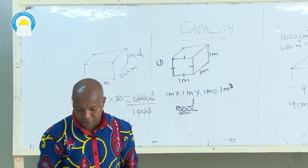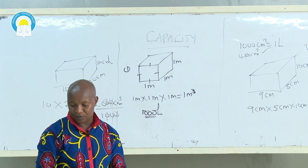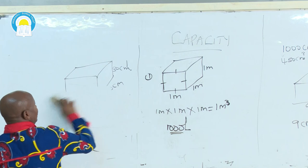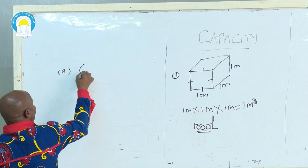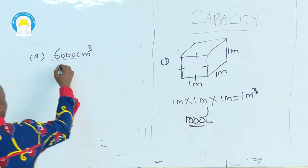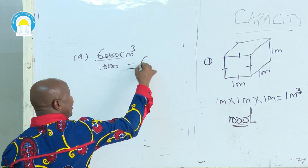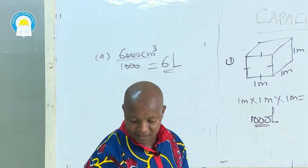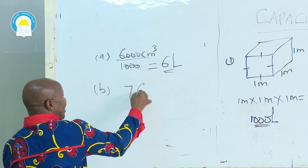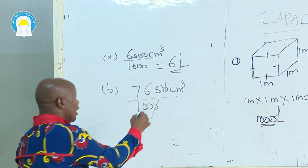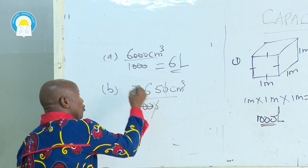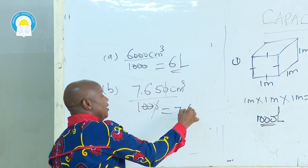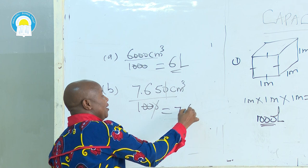Let's give some more examples. Convert the following measurements into liters. Number one: convert 6,000 cubic centimeters into liters. Divide by 1,000 — the three zeros cancel the three zeros. Our answer is 6 liters. Number two: convert 7,650 cubic centimeters into liters. Divide by 1,000 — cancel two zeros, move the decimal point back two places. Our capacity is 7.65 liters.